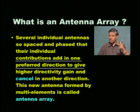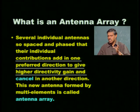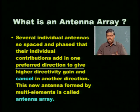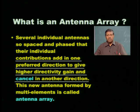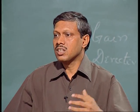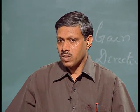By definition, an antenna array consists of several individual elements spaced and phased so that each antenna's individual contribution adds up at the point of observation — this is the constructive interference approach. The net field is the addition of all individual contributions, giving a very strong field at the point of observation, while canceling in unwanted directions.